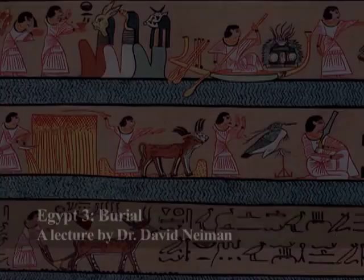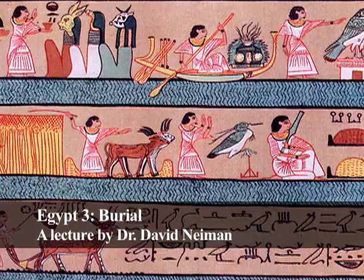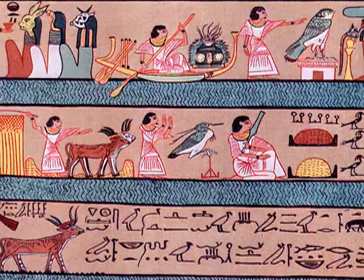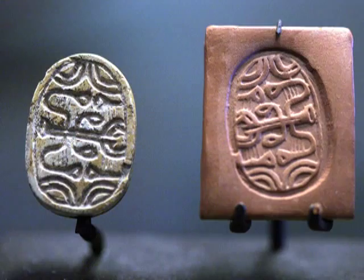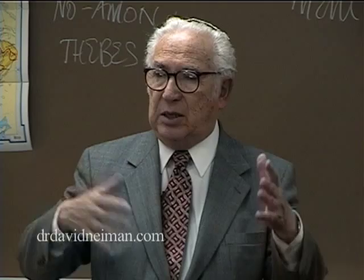Egypt became, sometime around 2500 BC, a very rich and powerful kingdom and they did expand out into the Mediterranean. We know this because Egyptian remnants have been discovered — usually seals with the names of the pharaohs — on the island of Crete and in places in Greece, showing that there was communication and trade going on at the time.